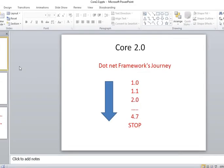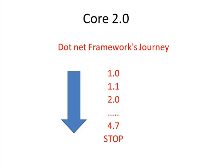The .NET framework journey started in the early 2000s. Version 1.0 was launched first, then 1.1, then 2.0 in 2005, followed by 3.0 and 3.5. With the passage of time we kept getting new versions with new features. Right now the latest versions are 4.6 and 4.7.